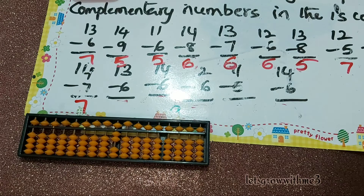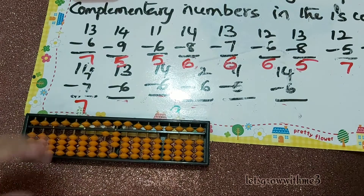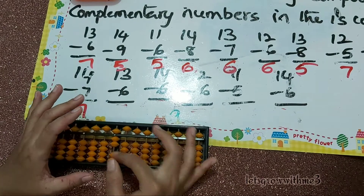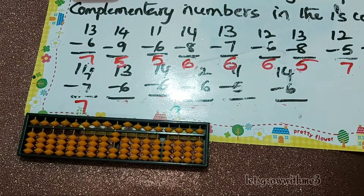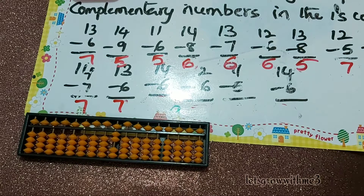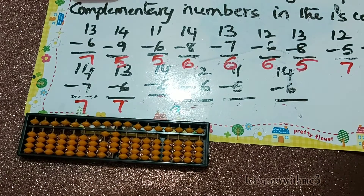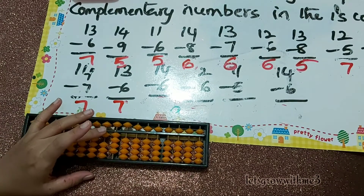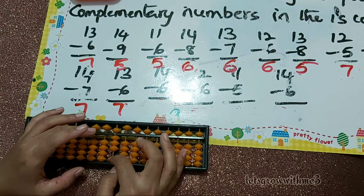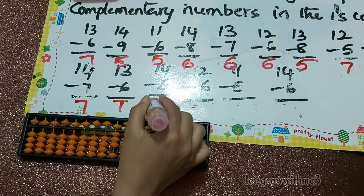Next: 13 minus 6. Papa down, mama down, baby down — so the answer is 7. Next: 14 minus 6. Papa down, mama down, baby down — so the answer is 8.